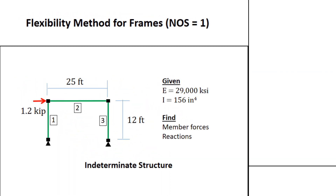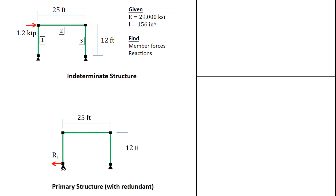This is the structure: a one story, one bay frame, 25 feet wide, 12 feet tall, with a 1.2 kip lateral force at the top. The members are numbered, E and I are given, and our task is to find the member forces and the reactions. I've chosen this primary structure by converting the lower left-hand pin to a roller, and the corresponding horizontal redundant force is shown as R1.